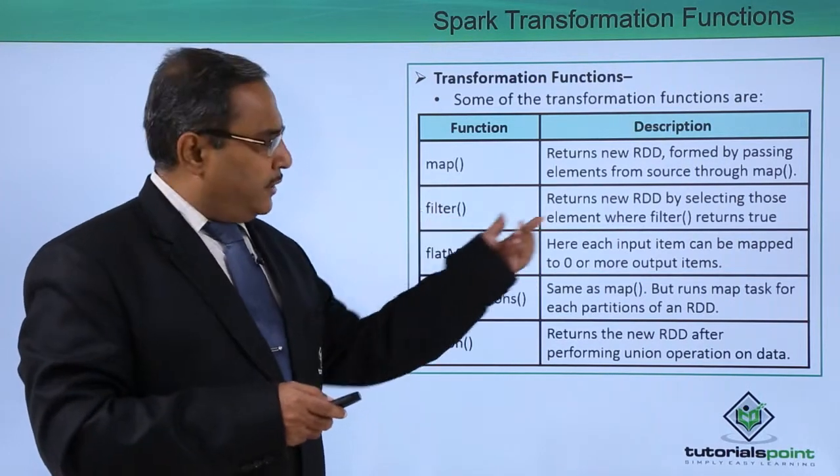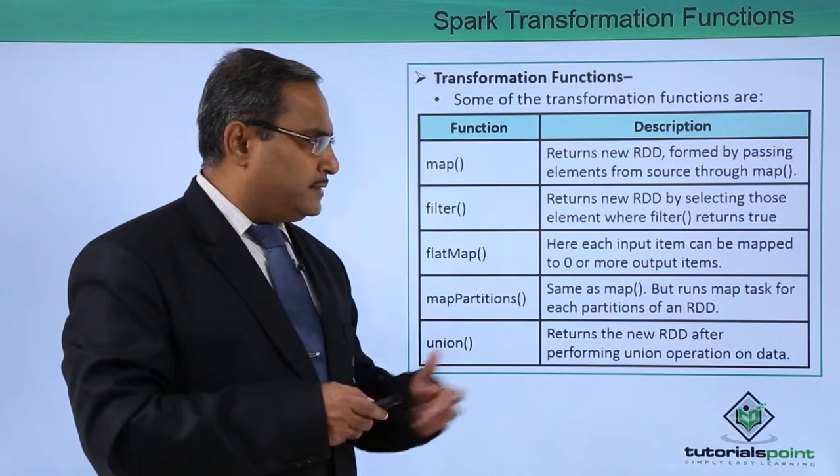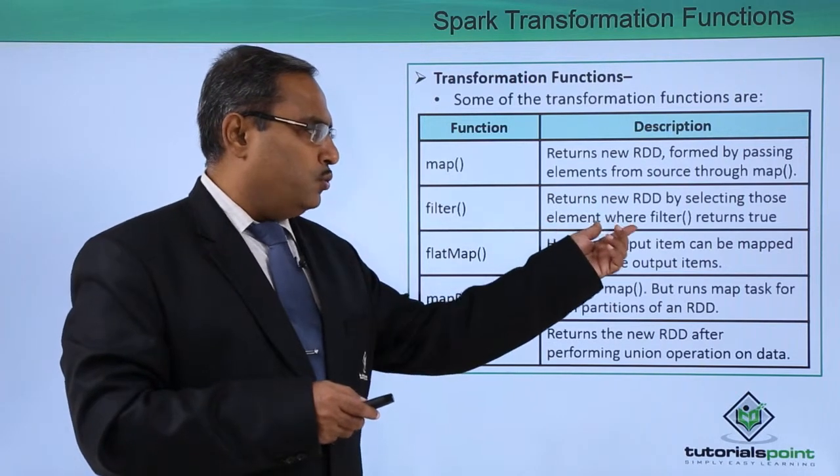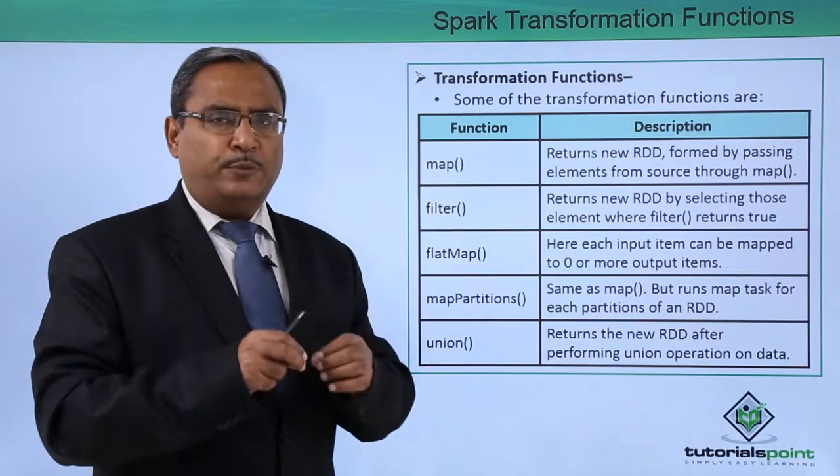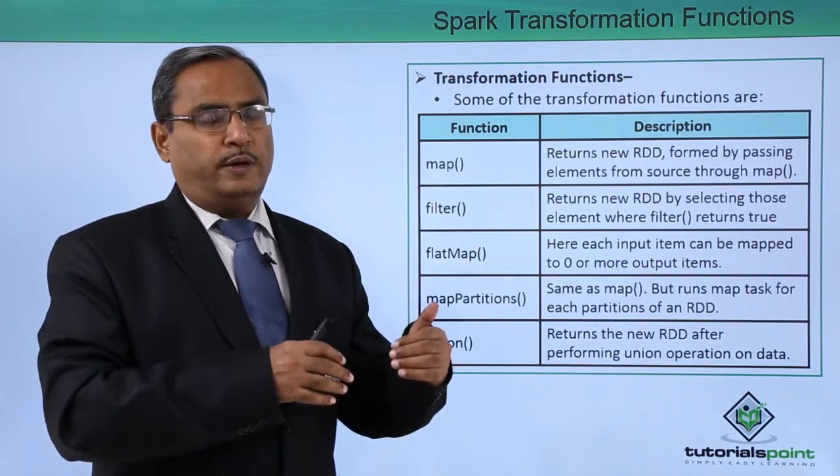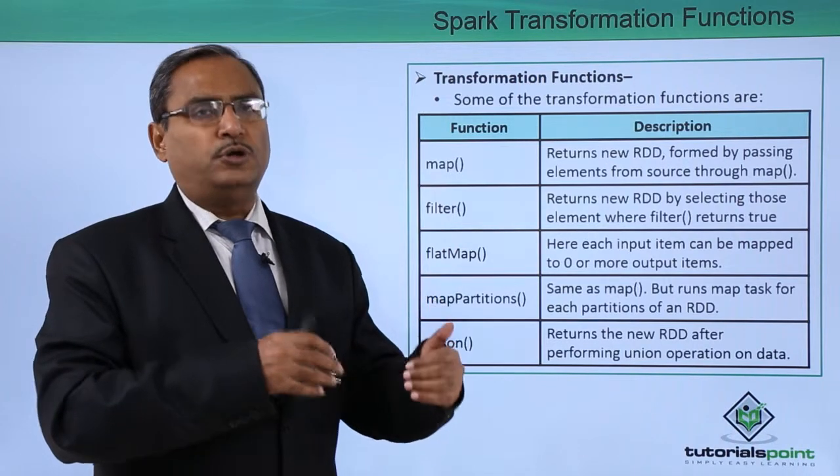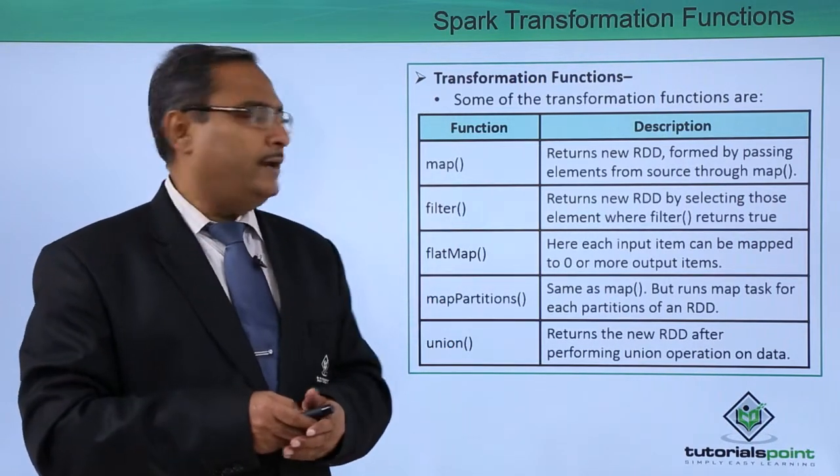Next one is the filter. Returns new RDD by selecting those elements where filter returns true. Filter will have some criteria, so depending upon the criteria, those records will be selected from the input to the output which are matching with the criteria.